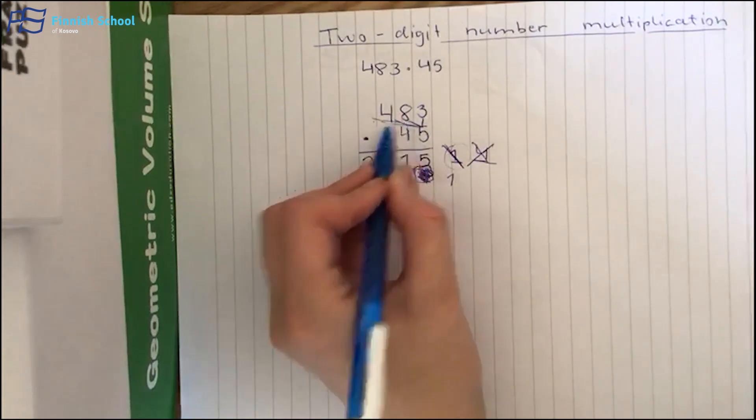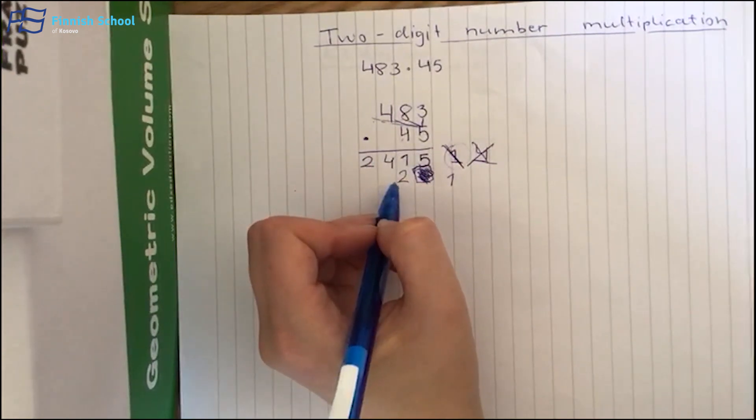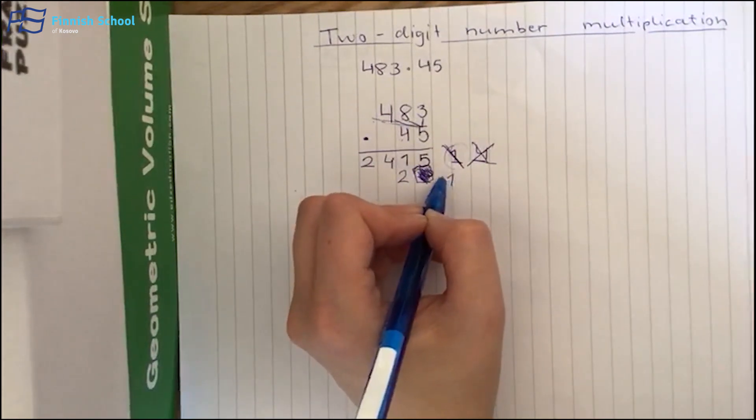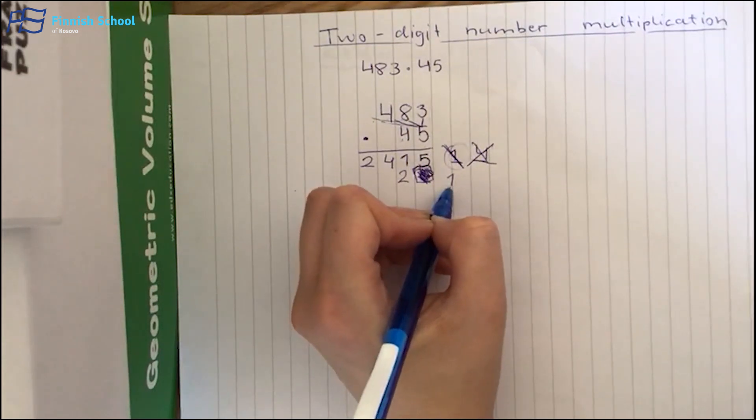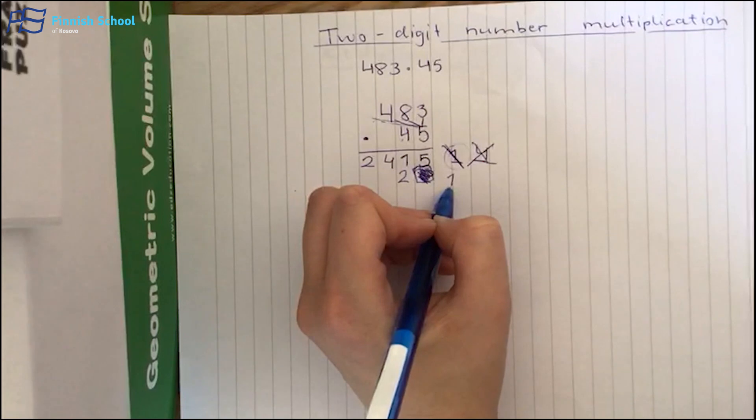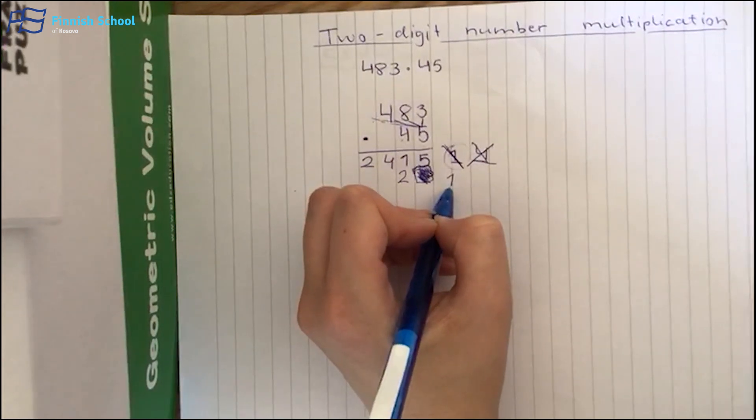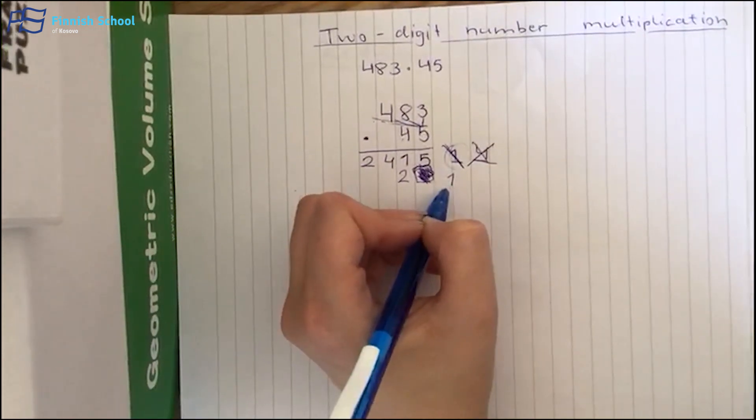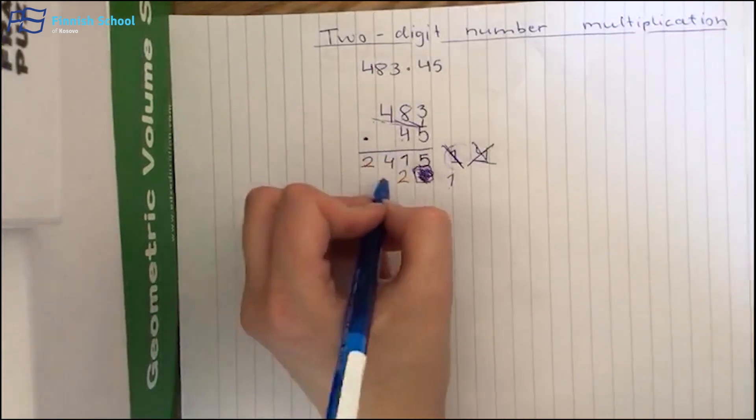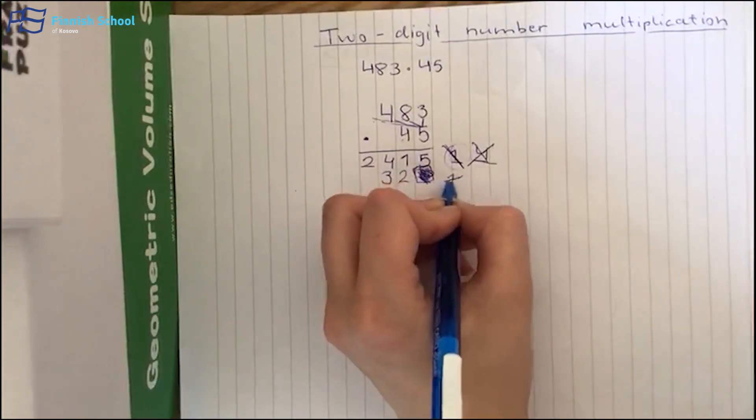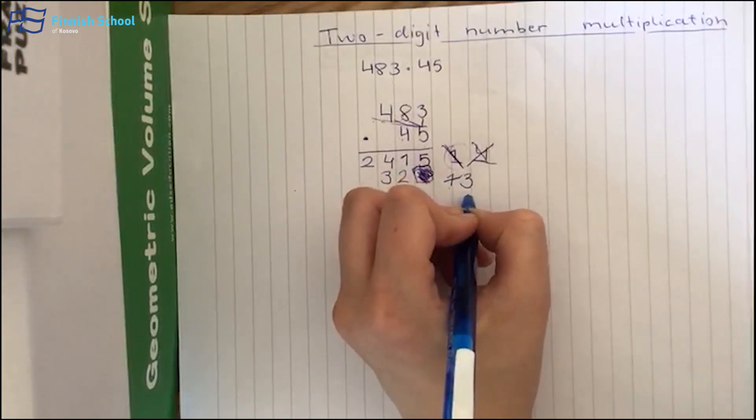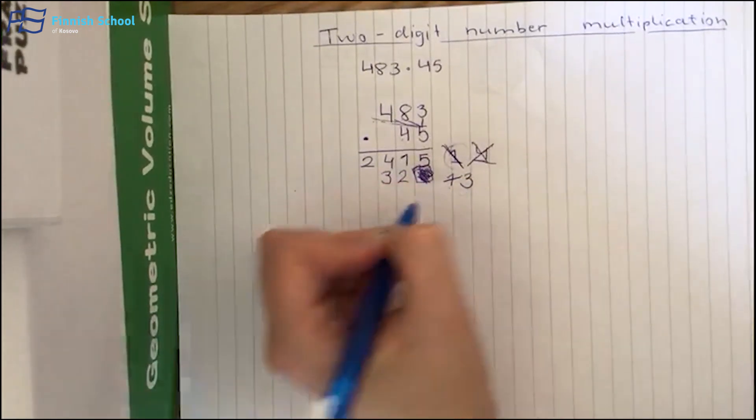4 times 8, it's 32. But now we have to remember to take the number 1. So it's 32 plus 1. 33. So let's put number 3 here, and also number 3 here as a reminder.